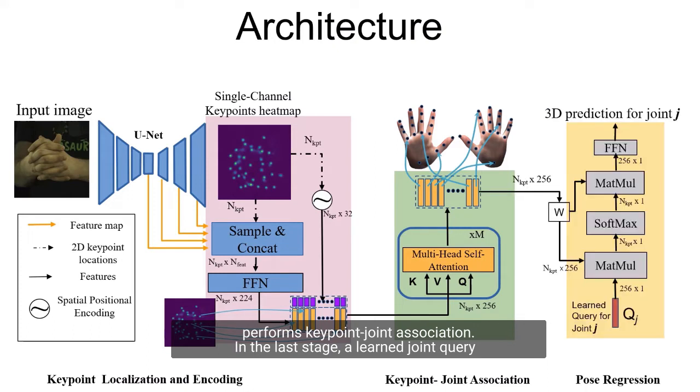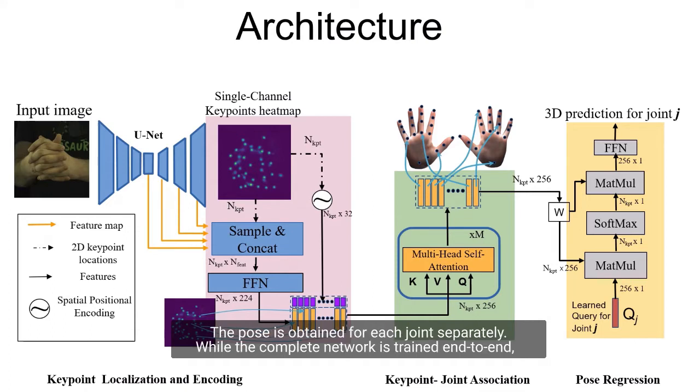The encoded keypoints are provided to the self-attention module that performs keypoint-joint association. In the last stage, a learned joint query for each joint is provided to a cross-attention layer which soft-selects the keypoints whose identity closely matches the query and uses the keypoint features to regress the joint pose. The pose is obtained for each joint separately.